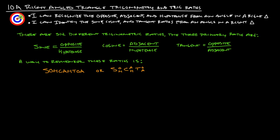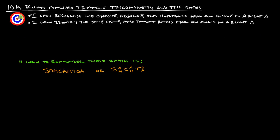There's a nice way to remember all those, and that is SOH-CAH-TOA. You may have heard of that before. The reason we use SOH-CAH-TOA is: sine is the opposite side over the hypotenuse, cosine is the adjacent side over the hypotenuse, and tangent is the opposite over the adjacent. Sine is opposite over hypotenuse. Cosine is adjacent over hypotenuse. Tangent is opposite over adjacent. Those are our three main trig ratios.